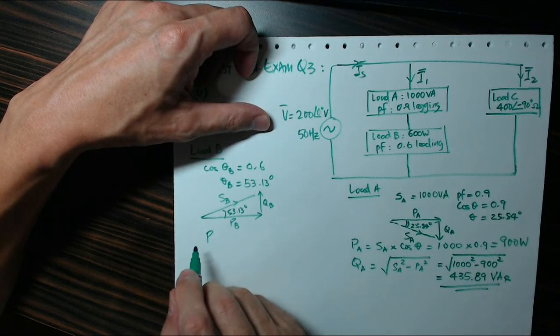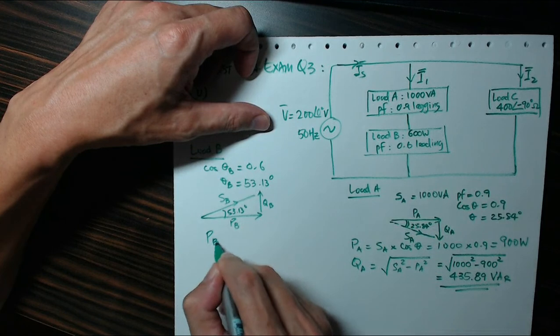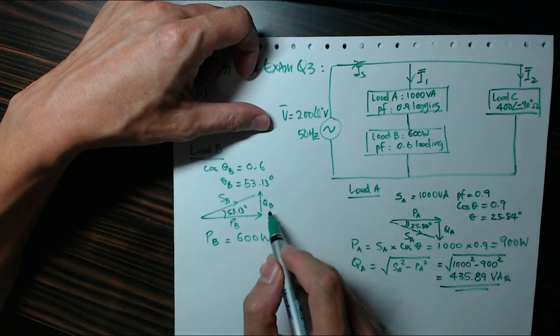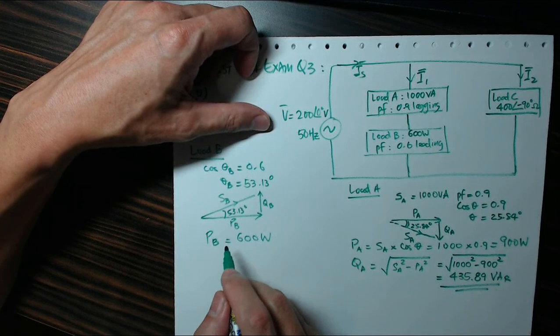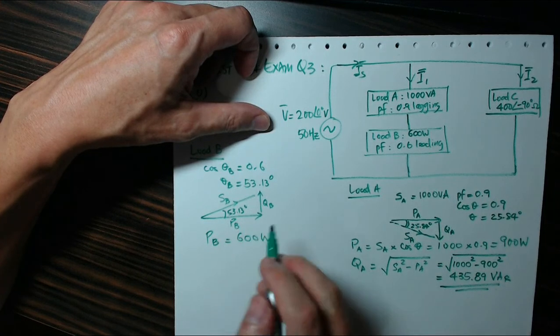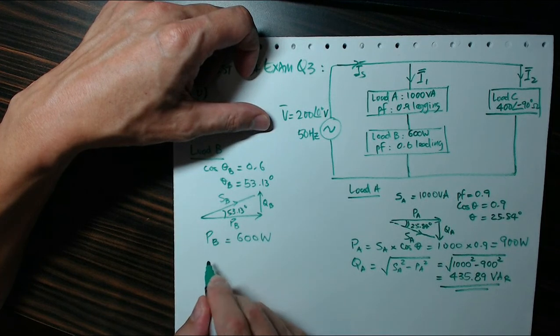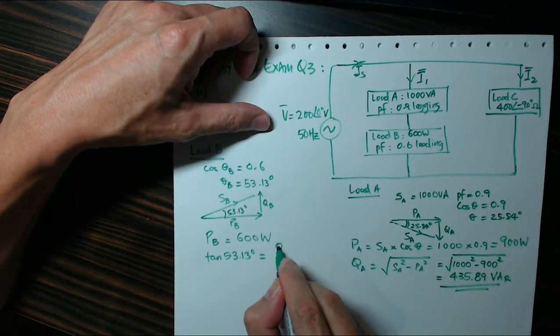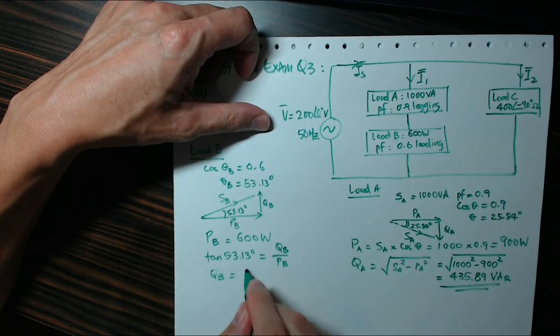Again, the same thing. The real power PB, this time given is the real power, so real power PB is 600 watts. Right, if I know PB and if I know the angle, I can calculate the other side. So from here, tangent theta, tangent 53.13 degrees is actually QB over PB.